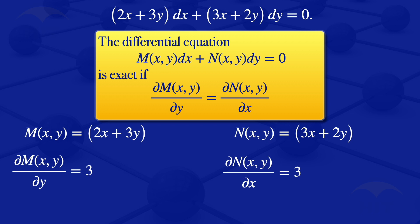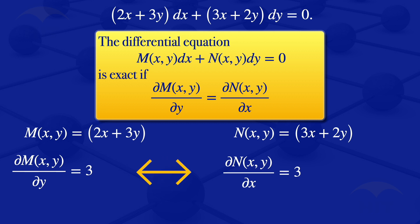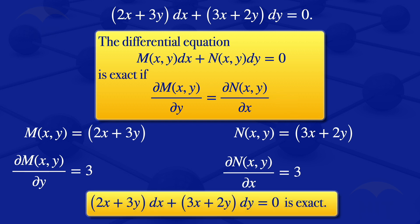So what we have is that both of these values are equal to 3 — they are equal. So they satisfy the exactness condition. And therefore we conclude that the equation (2x + 3y)dx + (3x + 2y)dy = 0 is exact.